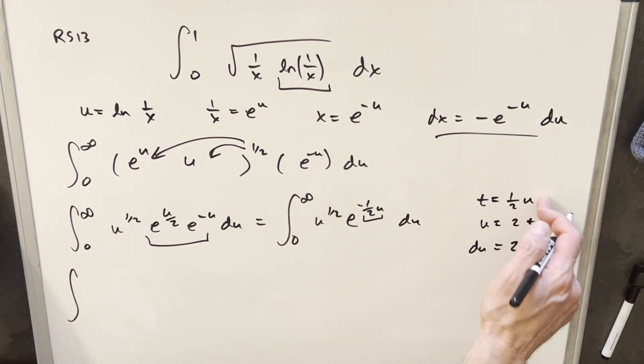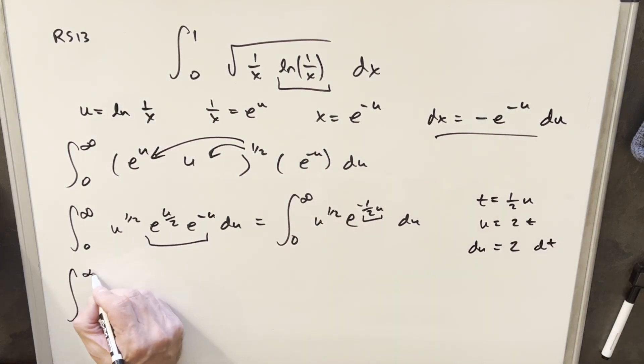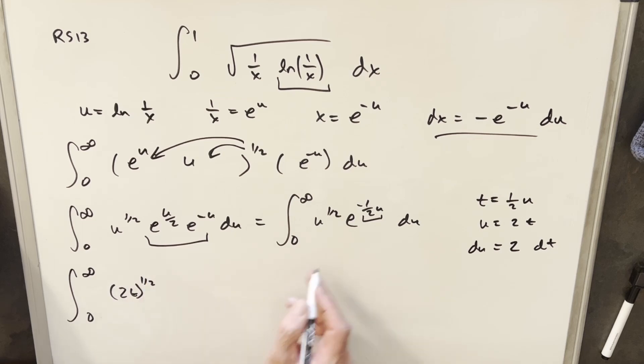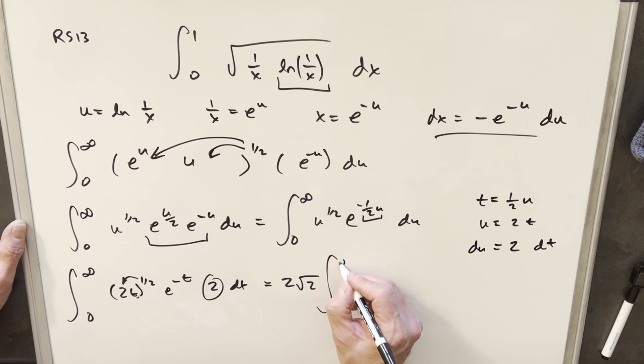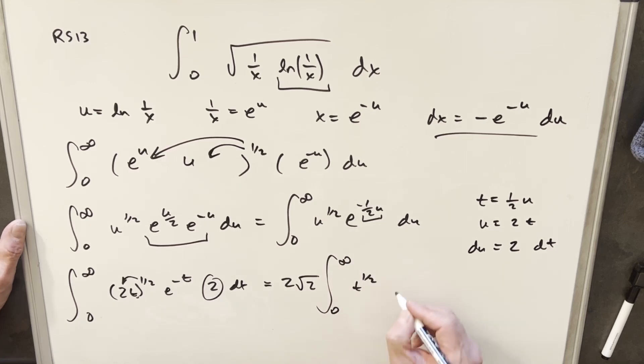Let's do this substitution. Plugging in infinity, half infinity is still infinity. Plugging in 0, it's just 0. For u we have 2t, so I'm going to have 2t to the 1 half, and then e to the minus t, 2 dt. I can bring this 2 out front of my integral. 2 to the 1 half is square root of 2, so I have all my constant terms out front. Then here we're going to have just t to the 1 half, e to the minus t, dt.